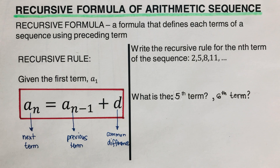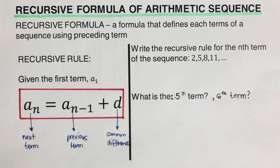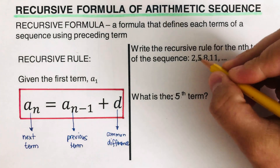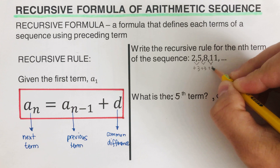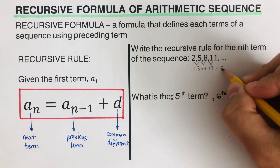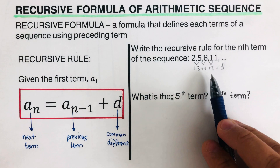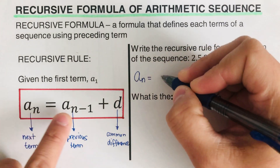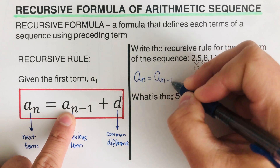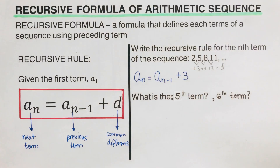Let's take some examples. Write the recursive rule for the nth term of the sequence 2, 5, 8, 11. As we can see, each term is added by 3, so our common difference is 3. We can plug this into the equation: a sub n is equal to a sub n minus 1 plus 3. This is the recursive formula for this sequence.